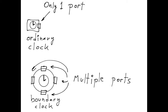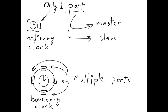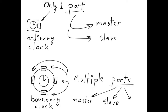Each port can be in several different states. The states relevant to establish a master-slave hierarchy are a master state and a slave state in the case of ordinary clocks, and a master state, slave state, and passive state in the case of boundary clocks.